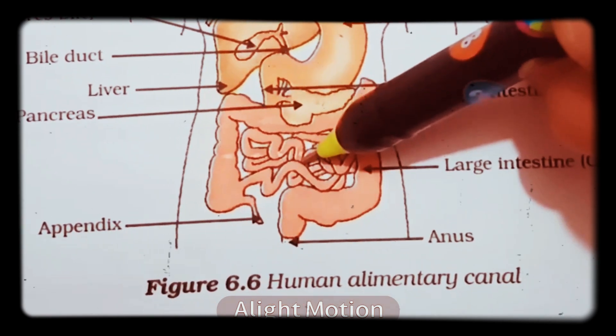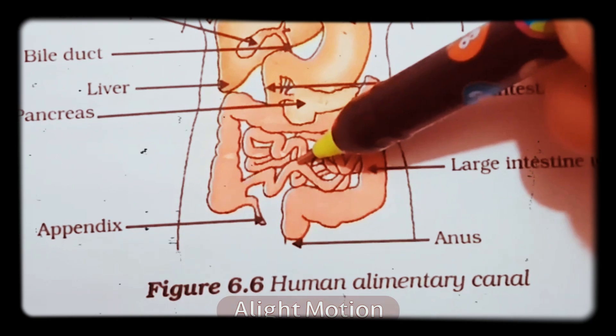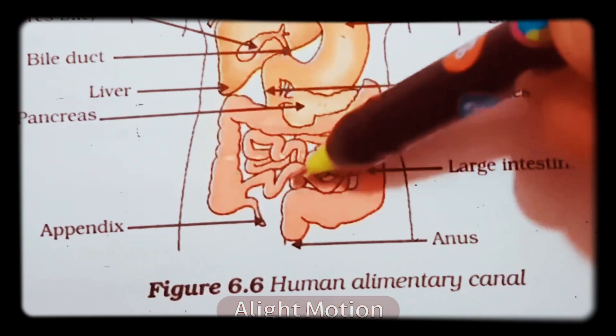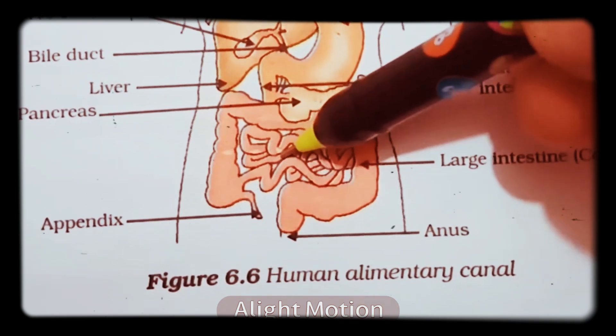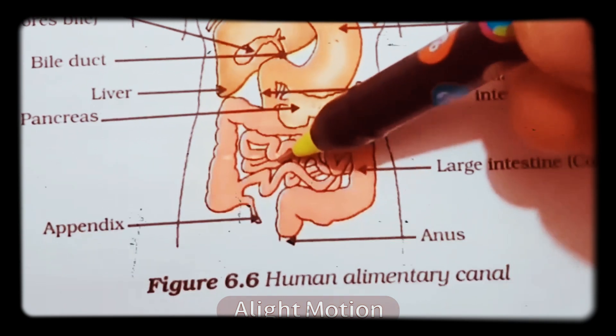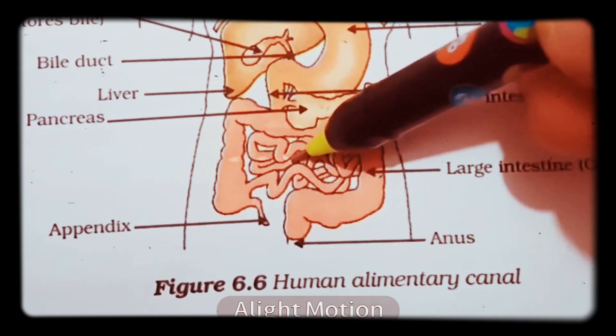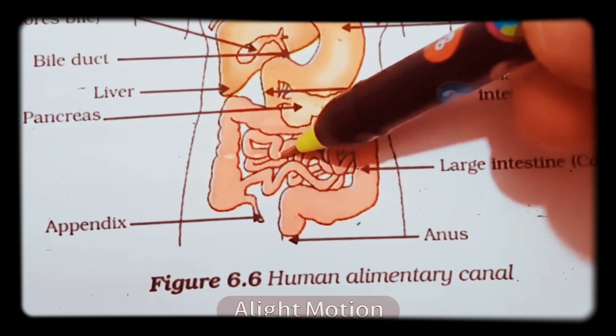These intestinal glands help secrete certain substances or enzymes for the final conversion of starch into glucose, proteins into amino acids, and fats into fatty acids and glycerol. This final conversion is completed in the small intestine.